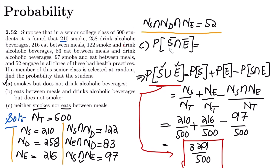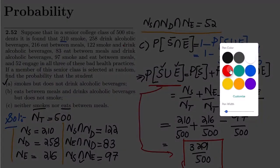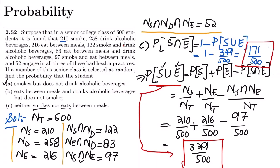To find the probability of a student who neither smokes nor eats between meals, I subtract this probability from 1: 1 minus 329 divided by 500, which gives 171 divided by 500. That is the solution to part C.